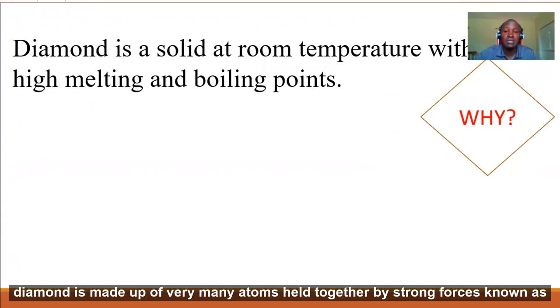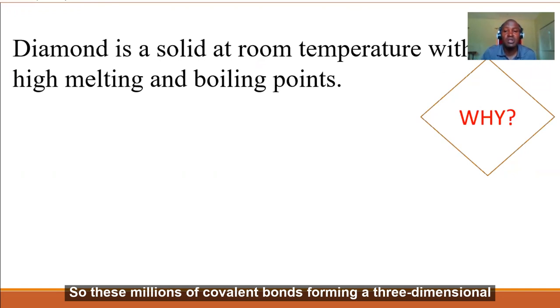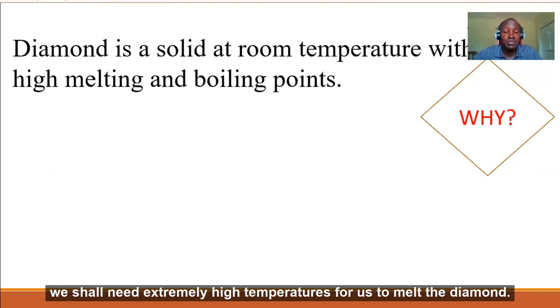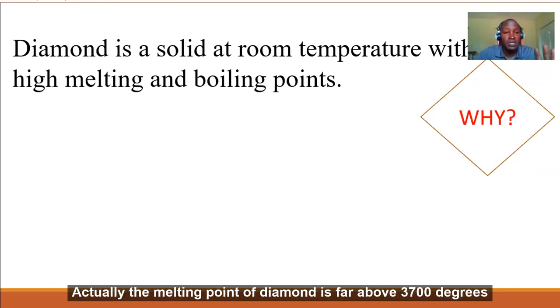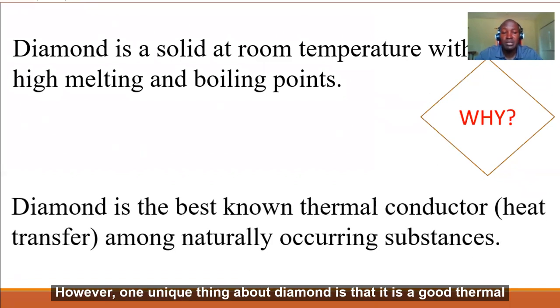So these millions of covalent bonds forming a three-dimensional structure give diamond a very high melting and boiling point, because we shall need extremely high temperatures to melt the diamond. Actually, the melting point of diamond is far above 3,700 degrees Celsius.